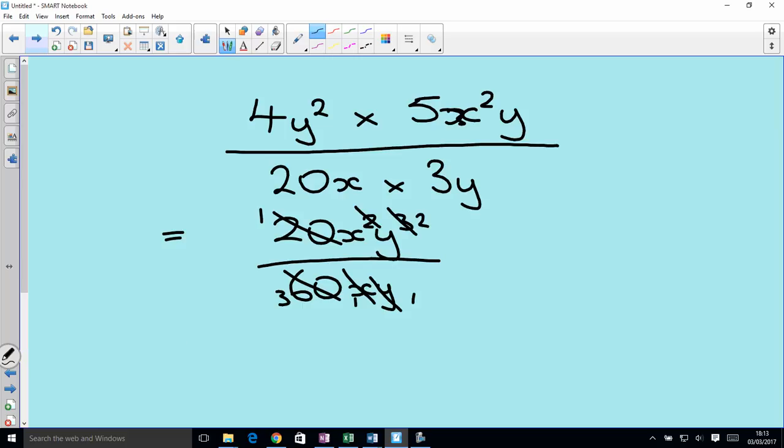So we are left with, on the top, 1 times x times y squared, which is xy squared. Don't leave the 1. And on the bottom, we have 3 times 1 times 1, which is 3. And we get an answer of xy squared over 3. And that's as far as we can go without any further information.